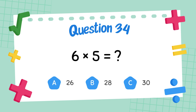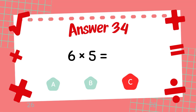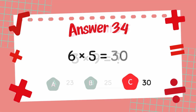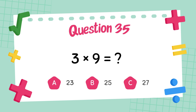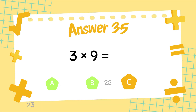What is 6 times 5? The answer is 30. What is 3 times 9? The answer is 27.